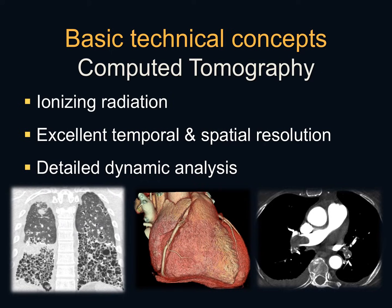CT is a very versatile imaging method that uses ionizing radiation. It has excellent temporal and spatial resolution, meaning it is fast and allows acquisition of images in very high detail. Because of these properties, it has become excellent for dynamic analysis of lesions. We have an example of a coronal reformat of the lungs in a patient with advanced interstitial lung disease, depicting very small pulmonary interstitial structures. We also have an example of volumetric or 3D reconstruction of the heart — a moving organ — which CT can image beautifully because it is fast, versatile, and detailed.